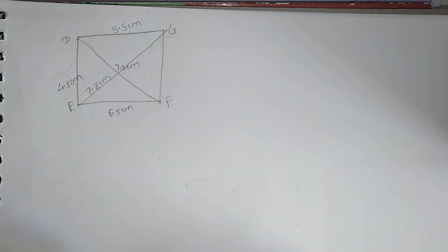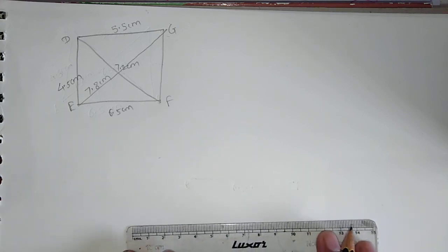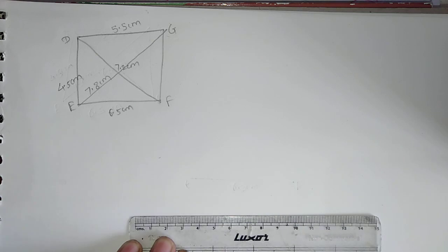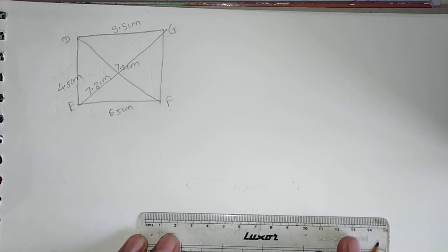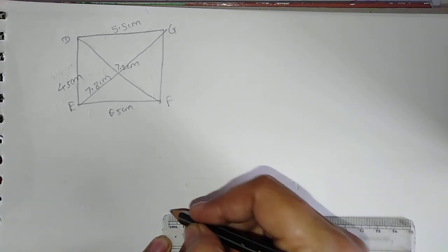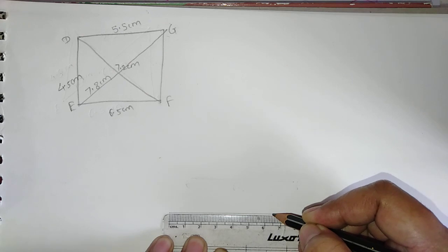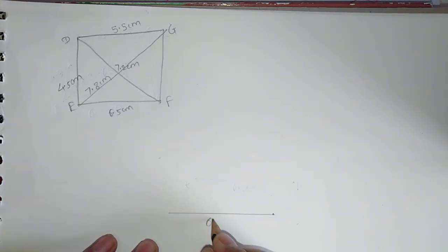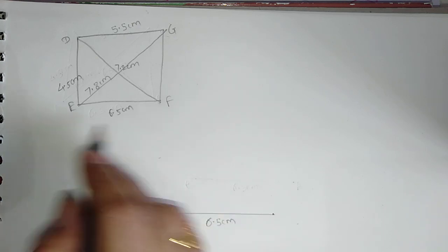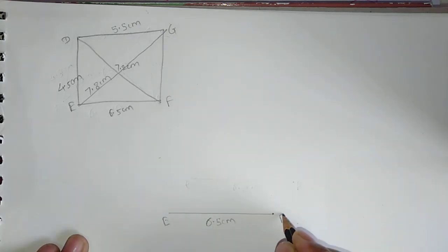The second diagonal EG is 7.8 cm. Now we will construct the actual quadrilateral. Firstly, draw the base line of 6.5 cm and give the measurement 6.5 cm with label EF.